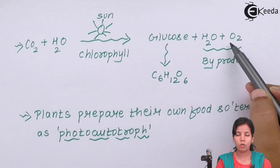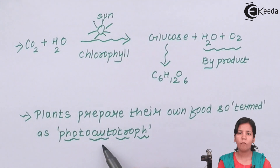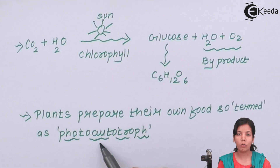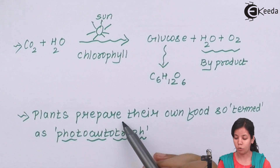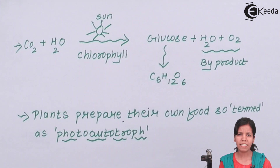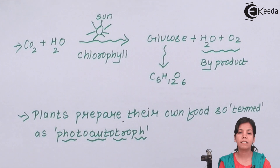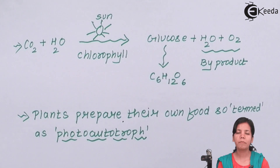Plants are called photo-autotrophs. Autotroph means anybody who can prepare their own food, and since plants prepare their own food using sunlight, they are termed photo-autotrophs. For example, if somebody prepares their food with the help of chemicals, they would be called chemo-autotrophs.